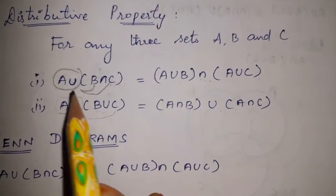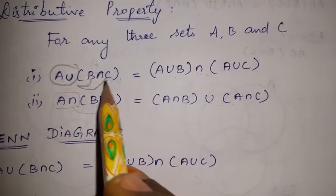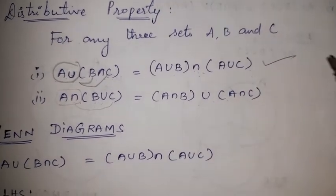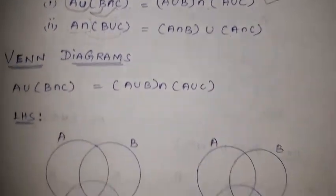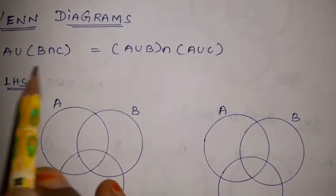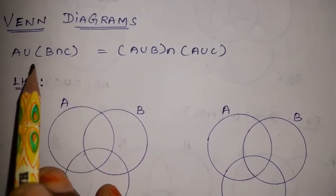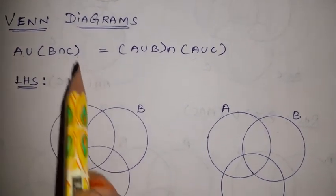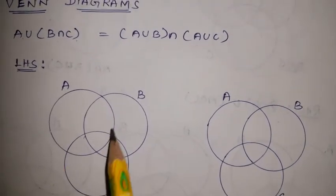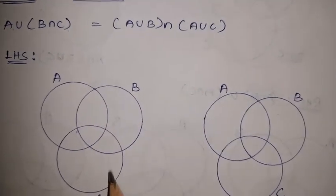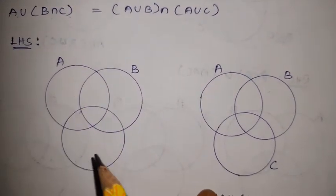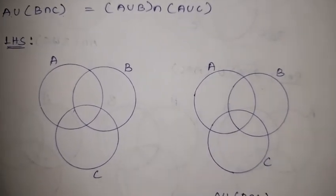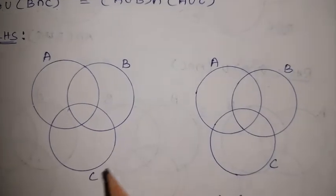Now let us verify the first property — A union (B intersection C) equals (A union B) intersection (A union C) — using a Venn diagram. For the first property, the left hand side uses three sets: Set A, Set B, and Set C. In the Venn diagram, all three sets intersect each other, with A, B, and C sharing common elements.